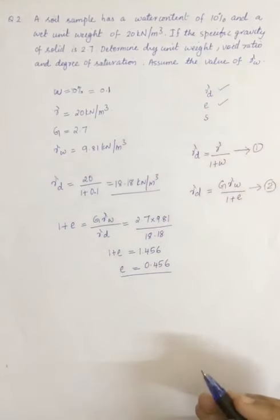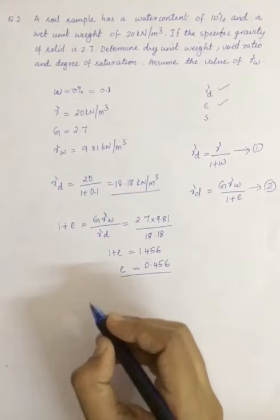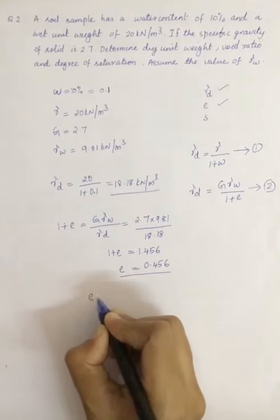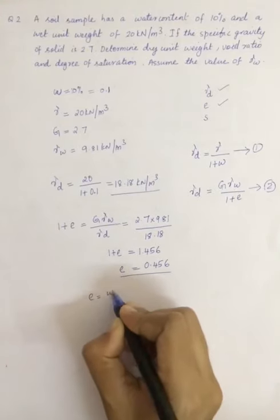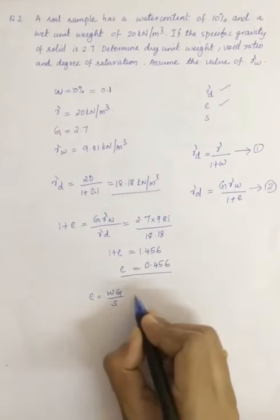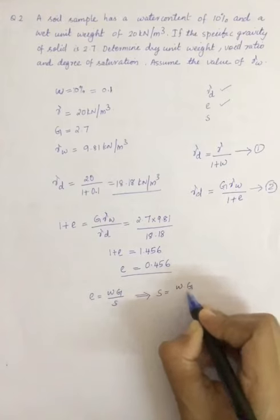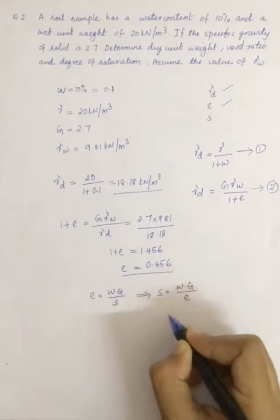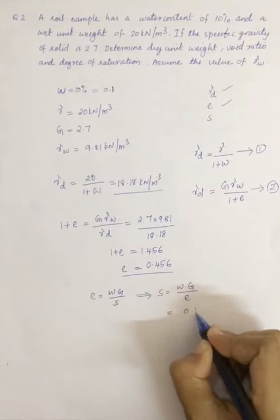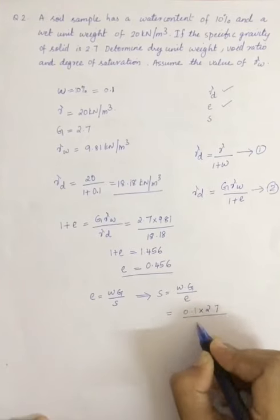As we all know, the relationship between void ratio, degree of saturation, and water content: e is equal to w g divided by s. So from this equation you can write s is equal to w g divided by e. All the values are known to us.